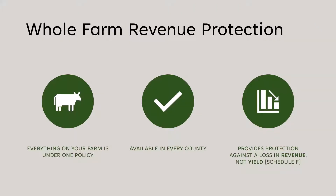If a crop insurance agent tells you there's no policy available for your farm or what you're growing, they're not being truthful, because whole farm revenue protection would cover anything you're producing on the farm. If you're bringing in cattle to butcher and selling the meat, you're not producing it, so it wouldn't be covered — but anything you're actually producing on your farm is.